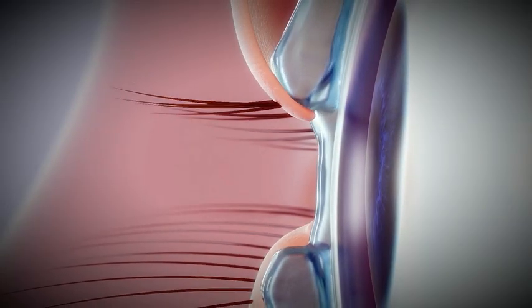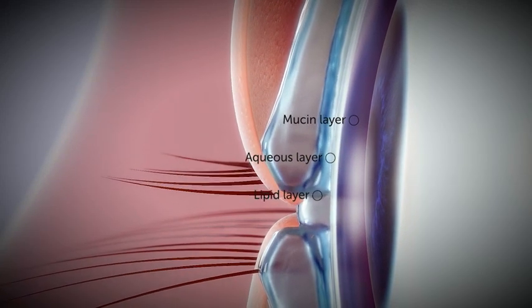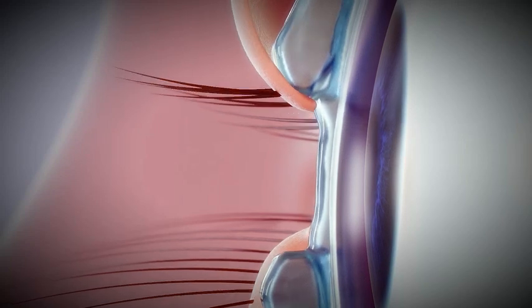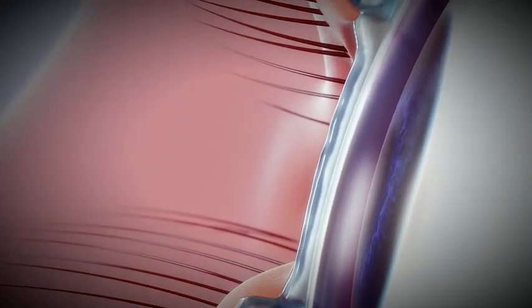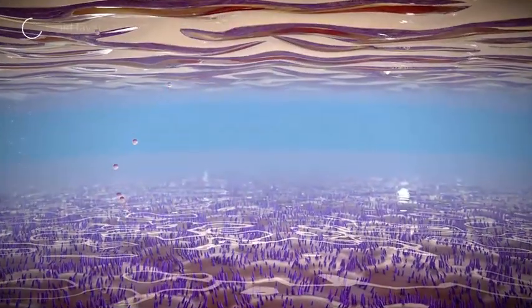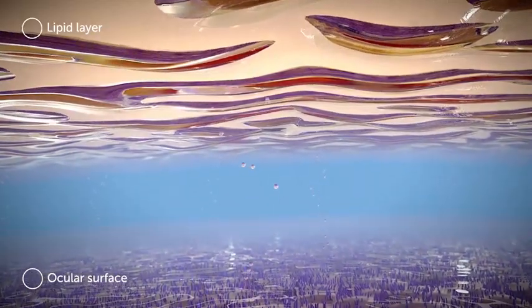The tear film is composed of the lipid, aqueous, and mucin layers. The aqueous and mucin layers are referred to as the mucoaqueous layer in a recently published dry eye workshop report. A healthy lipid layer prevents evaporation of the aqueous layer, which protects the ocular surface.